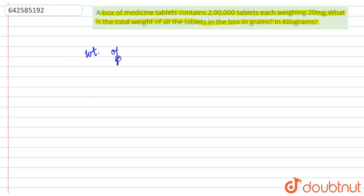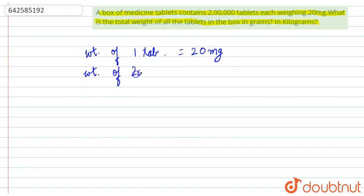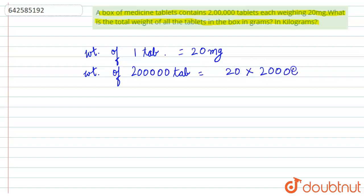The weight of one tablet is equal to 20 milligrams. So the weight of two lakh tablets will be more, so we multiply: 20 into two lakh, and the answer will be 40 lakh milligrams.